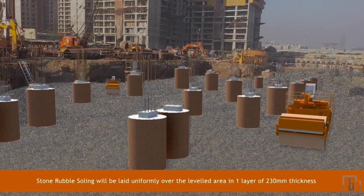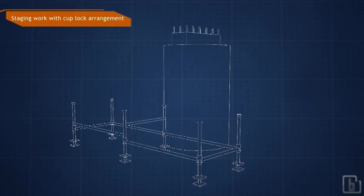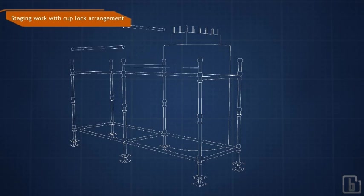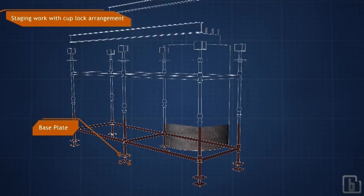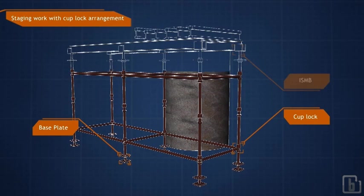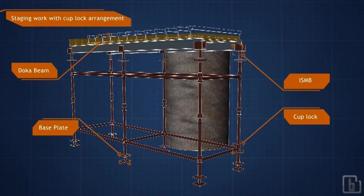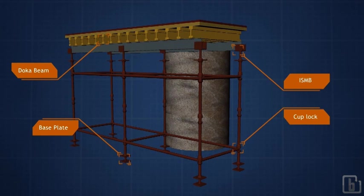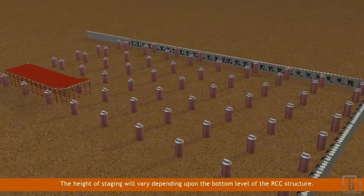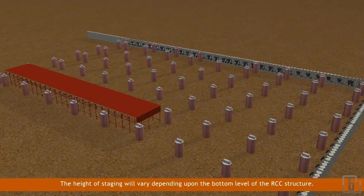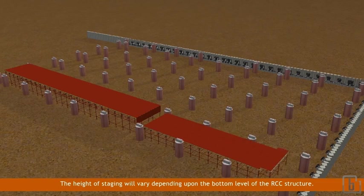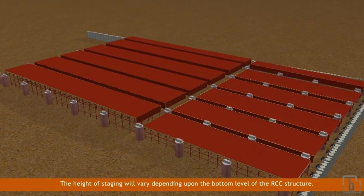Staging and bottom shuttering: Staging work will be started with cuplock arrangement. The height of staging will vary depending upon the bottom level of the RCC structure. After placing a bottom shutter as per required level and position, rebar work for slab and beam will commence.